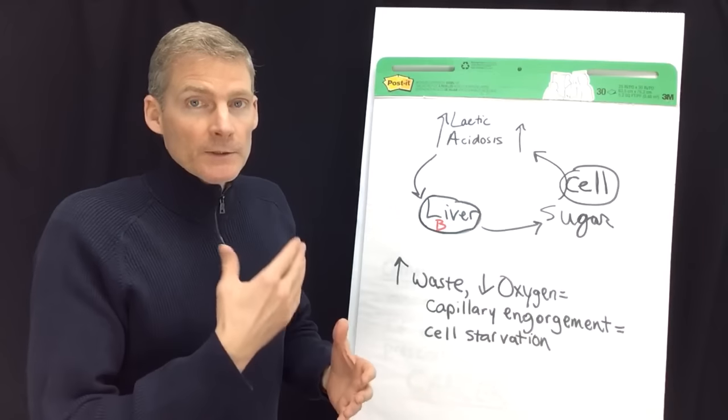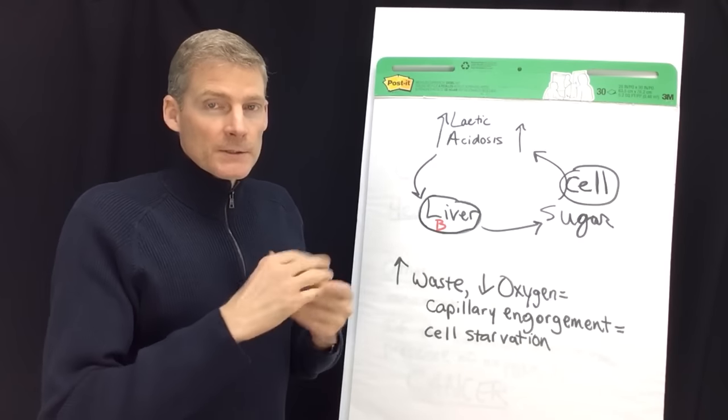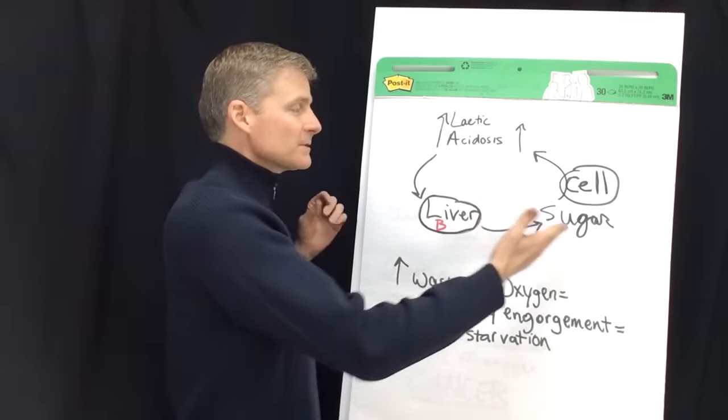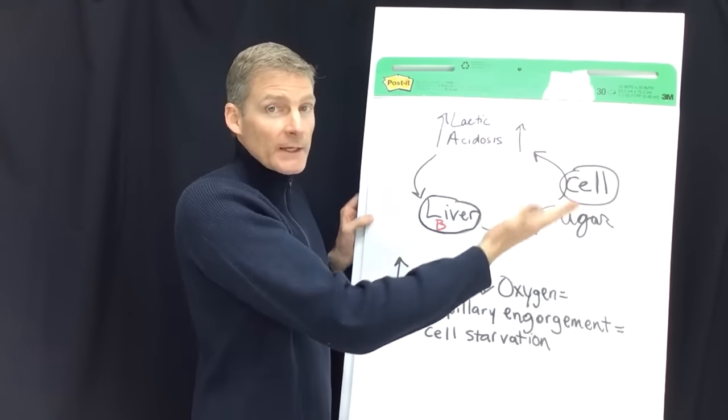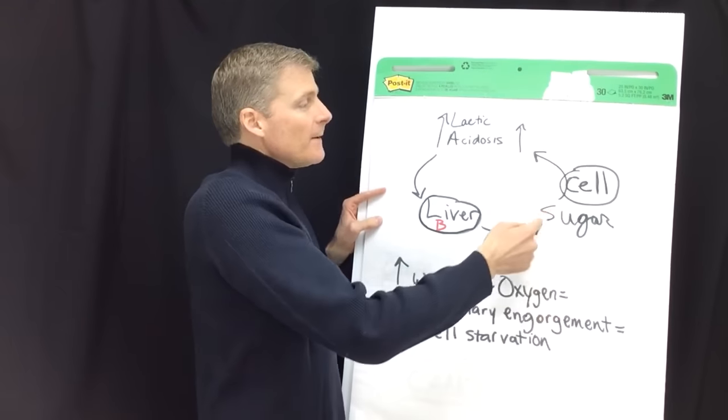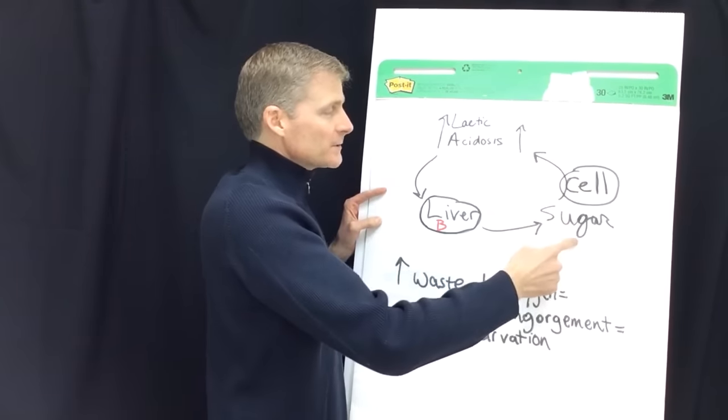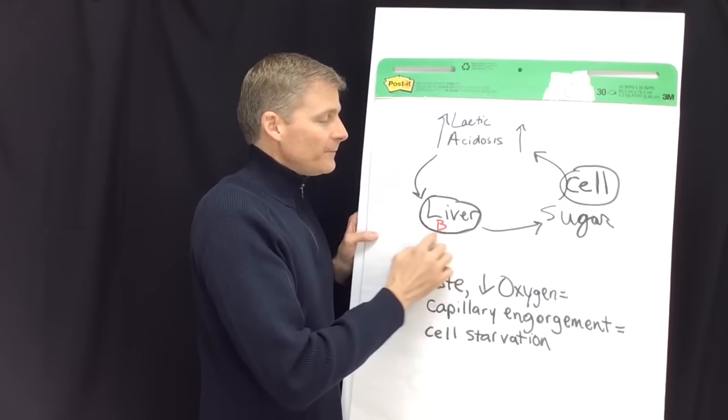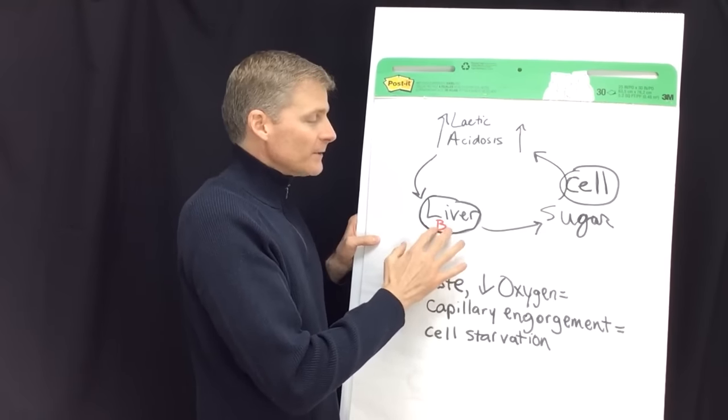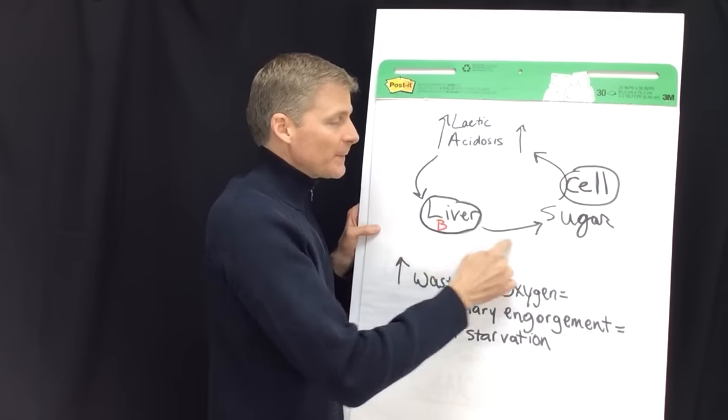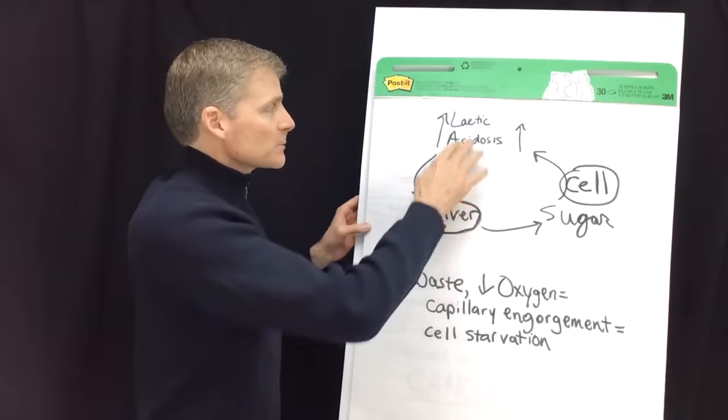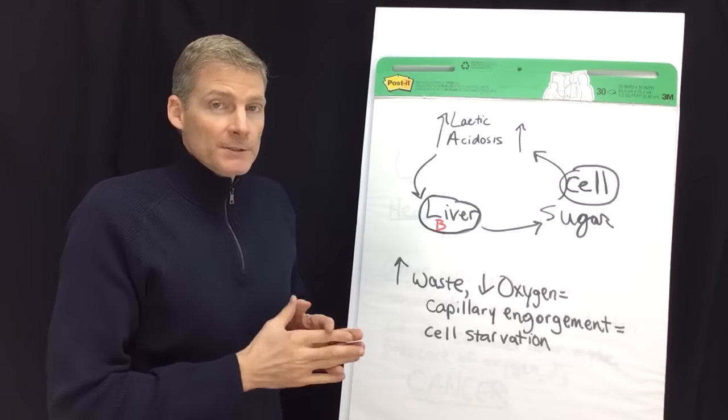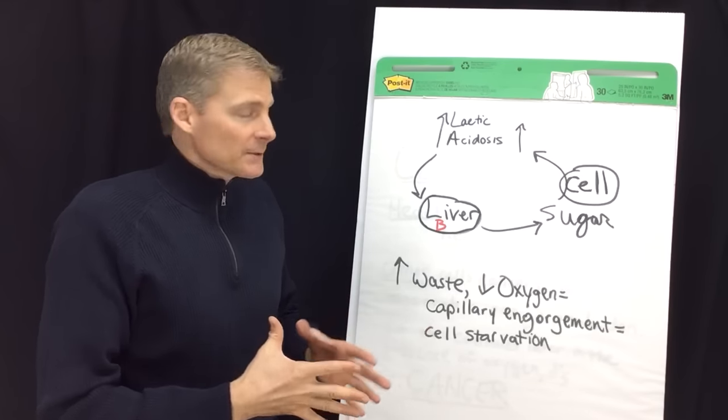Sugar could be bread, pasta, cereal, the excessive consumption of sugar over the course of many decades. When the cell burns sugar as fuel, there are four waste products and they all need to be handled by the liver. One of them converts back into sugar. But if those waste products are excessively high relative to oxygen, that's called lactic acidosis.